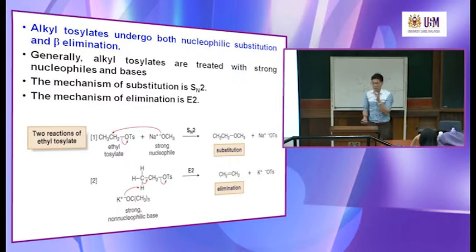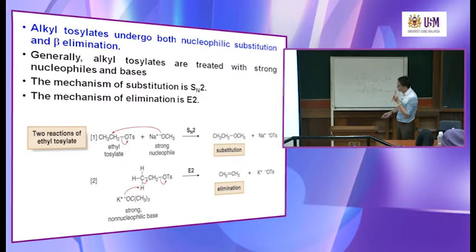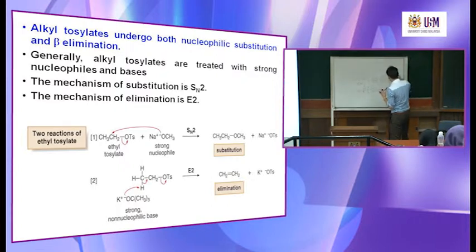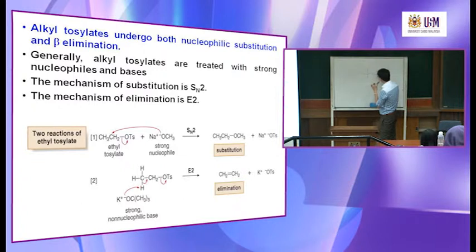Elimination means removal of H to form a double bond — not removal of water in this case. It removes a proton to form a double bond. The beta hydrogen here: you have H, H, H on the beta carbon, and CH₂-OTs on the alpha carbon.